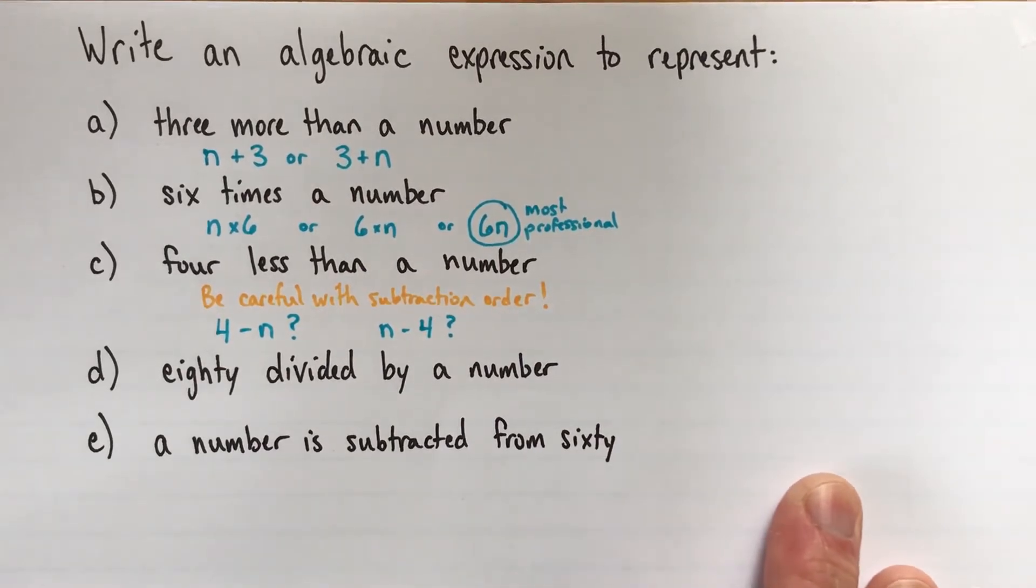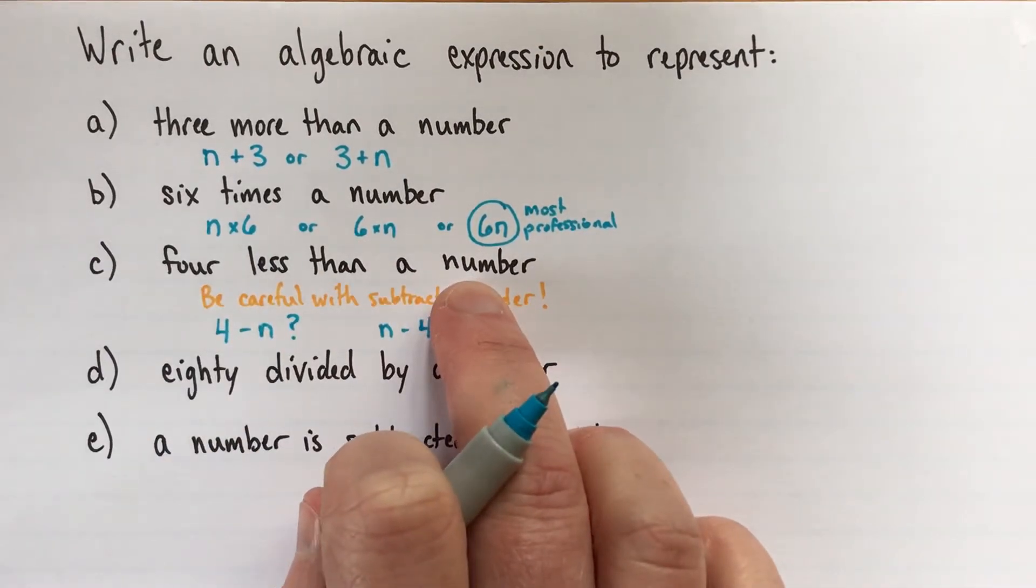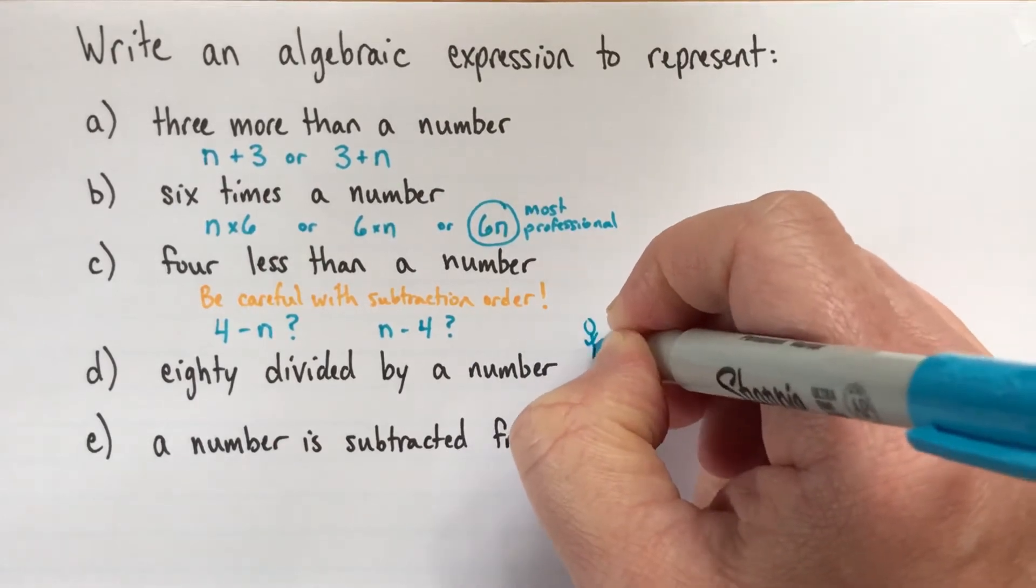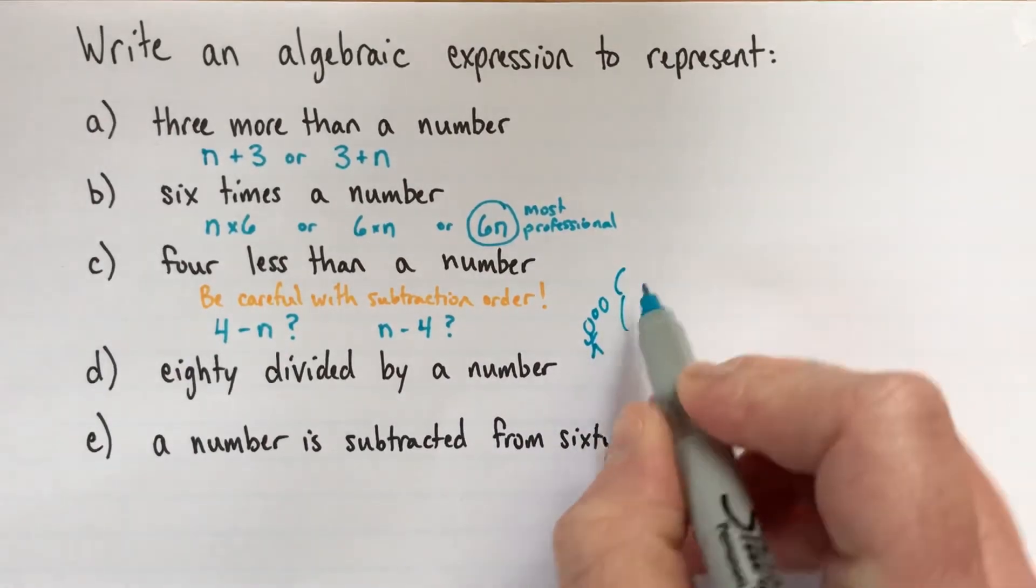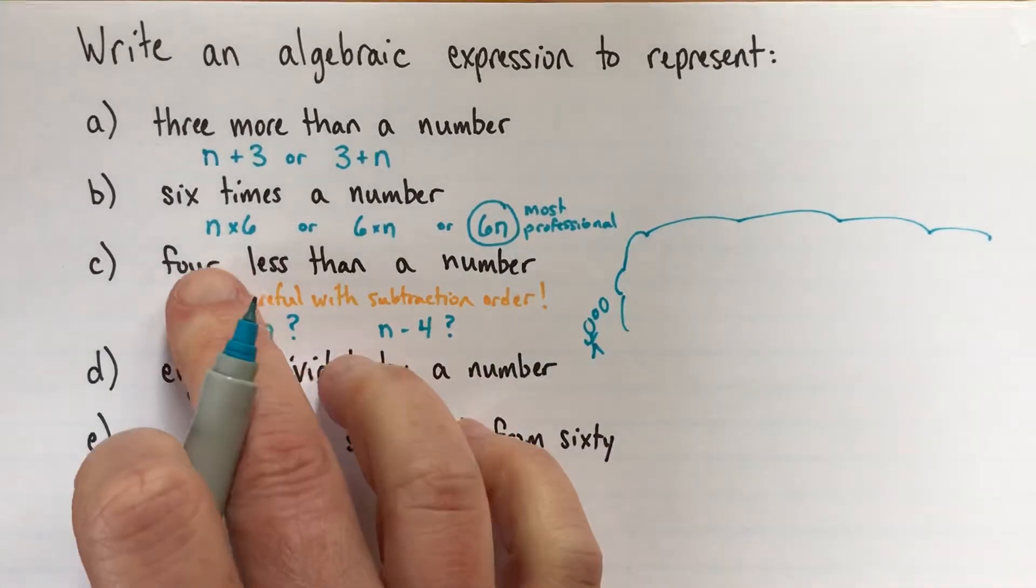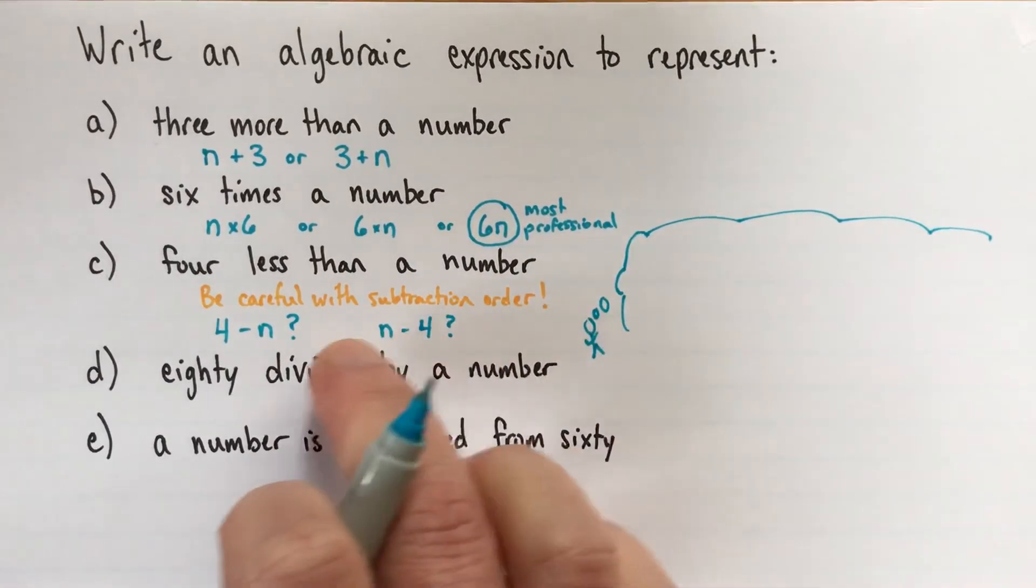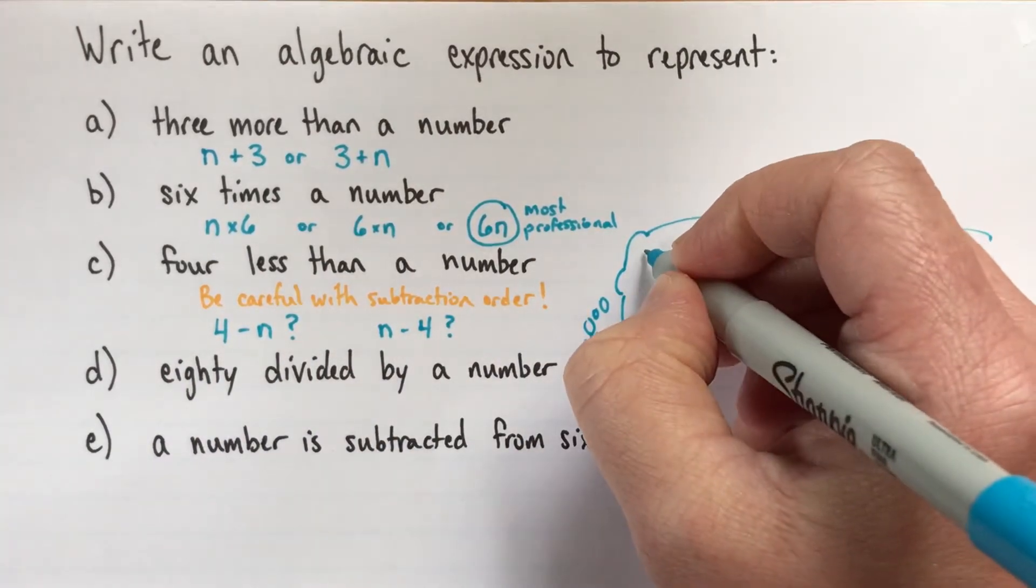So I would encourage you to do the following every time you're doing a subtraction, a sort of problem like this, at least until you're really experienced with it. I actually like to draw this little stick person here. And the stick person has a thought bubble. And I kind of write it like this to show me this isn't going to be my actual answer. This is going to be how I think about the answer. So what I'm going to, how I'm going to think about it is I'm going to replace 'a number' with an actual number. Alright, just to think about it, to decide is it four subtract n or n subtract four.